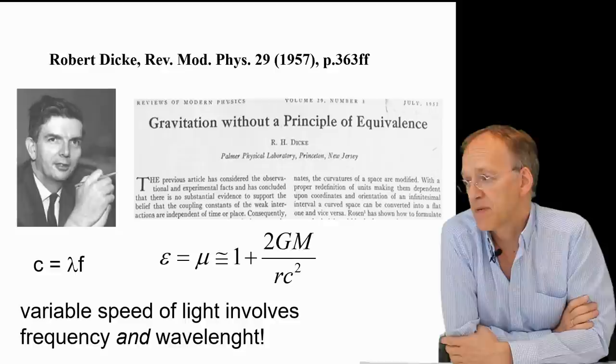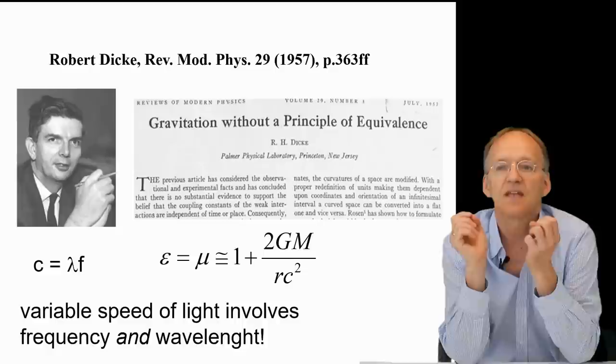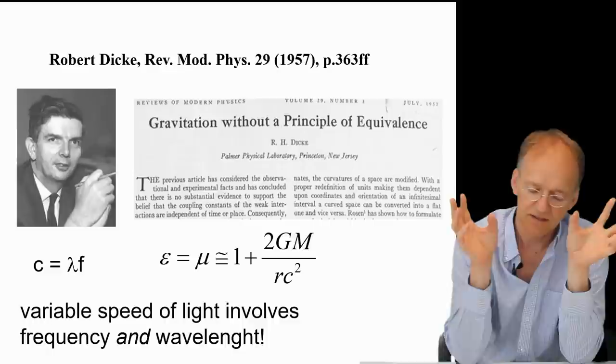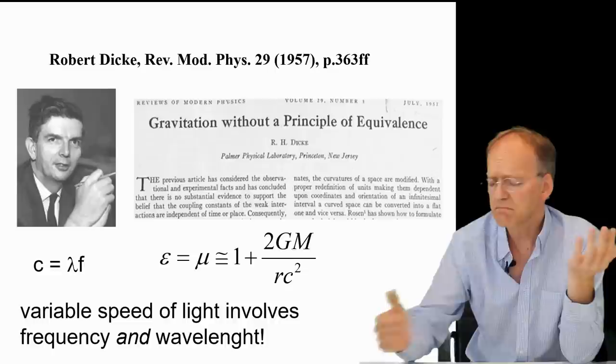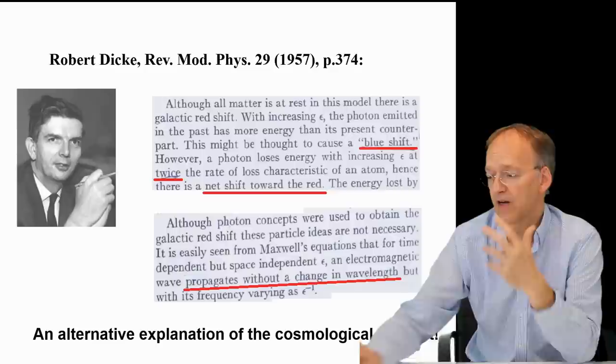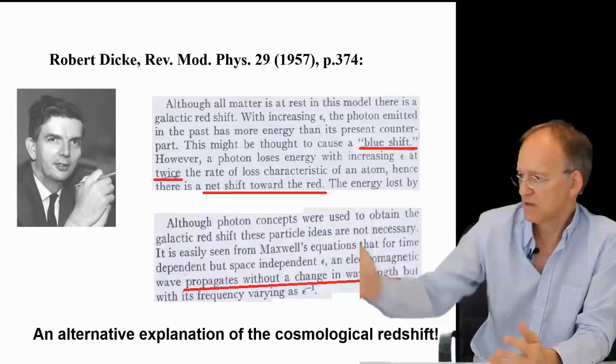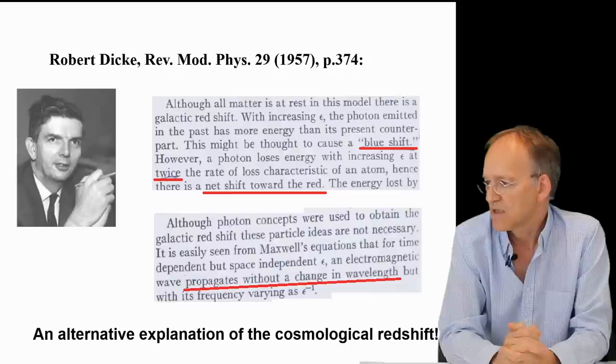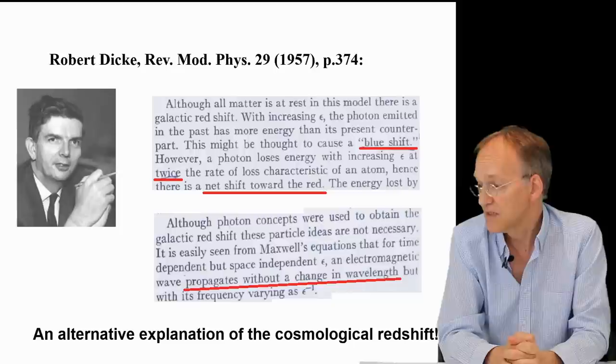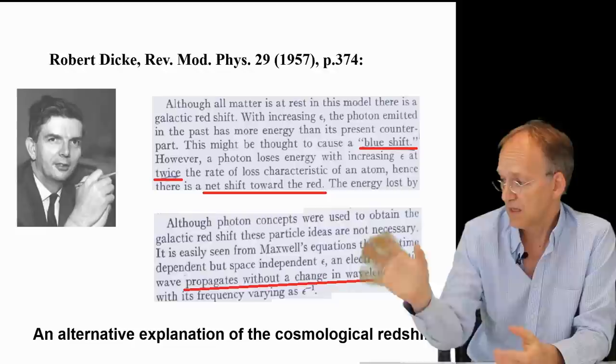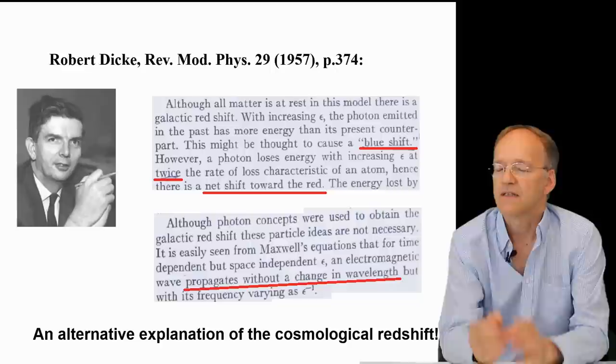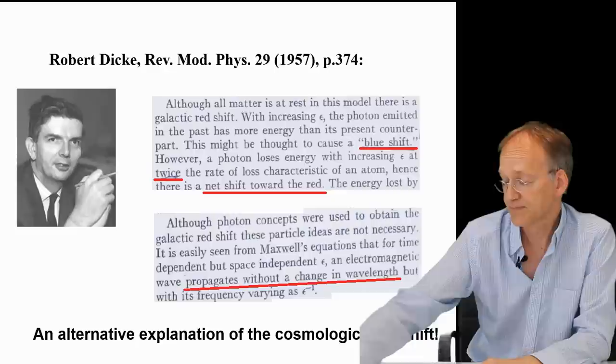Well for the explanation let's go back to the paper in 1957 I have already mentioned several times in the other videos and it really contains a lot of scientific gems, Mach's principle and he corrected for Einstein's error in 1911 and described relativity. One thing almost forgotten or overlooked is on page 375, Robert Dicke provides an alternative explanation for the cosmological redshift. So now listen, this might be thought to cause a blue shift however a photon loses energy with increasing c twice the rate so hence there is a net shift toward the red. And he also says it's easily seen from Maxwell's equations that for time dependent but space independent index of refraction an electromagnetic wave propagates without a change in wavelength. That's really huge but I don't think he explained it very well and maybe for this it didn't get the attention it deserved.